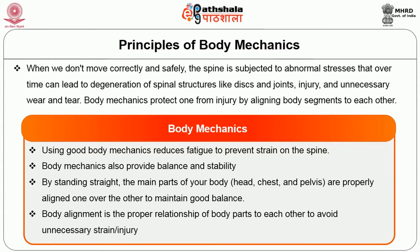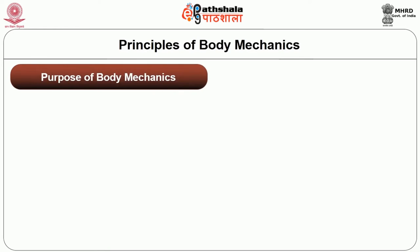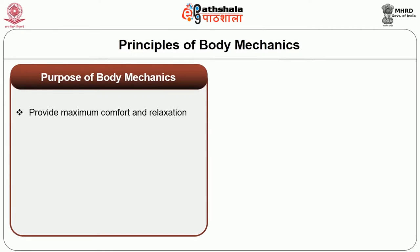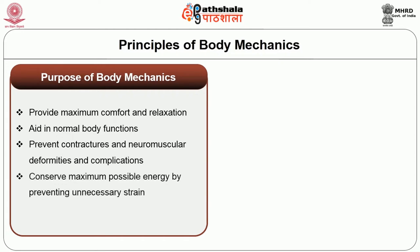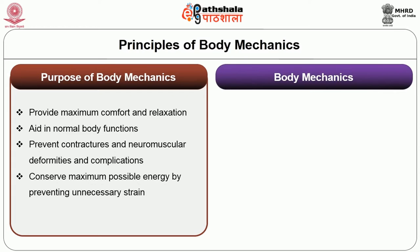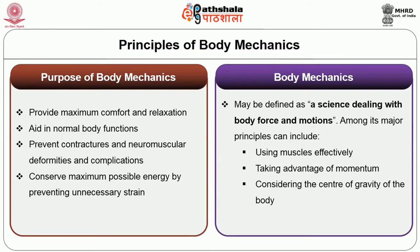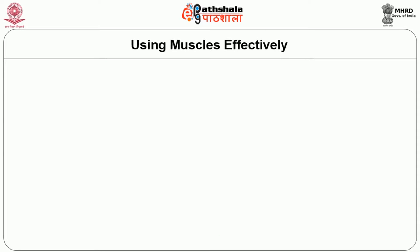Body mechanics can also provide balance and stability. By standing straight, the main parts of your body — head, chest, and pelvis — are properly aligned to maintain good balance. Body alignment is the proper relationship of body parts to each other to avoid unnecessary strain or injury. The main purpose of body mechanics is to provide maximum comfort and relaxation, aid normal body function, prevent neuromuscular deformities and complications, and conserve energy by preventing unnecessary strain. Body mechanics deals with body force and motions; its major principles include using muscles effectively, taking advantage of momentum, and considering the center of gravity.